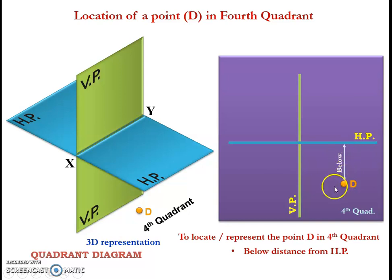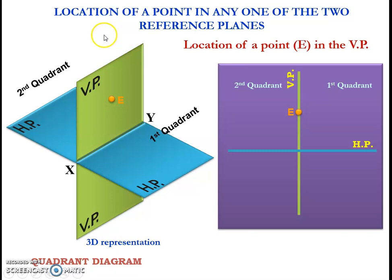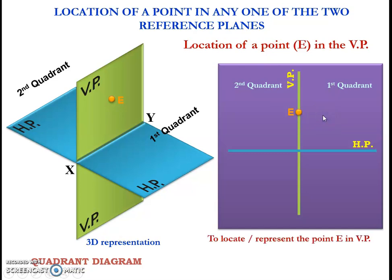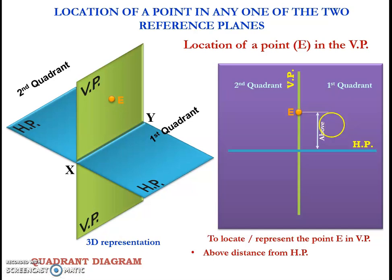Now let us move on to the second case: location of a point in any one of the two reference planes. Let us consider point E which is located in the vertical plane. Here, to locate or to represent the point E, we need only the above distance from the horizontal plane. Since it is located in the vertical plane, the in-front-of or behind distance becomes zero.